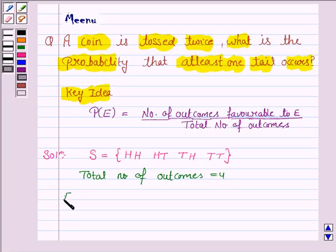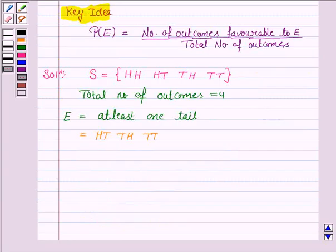So, the total number of outcomes are 4 and E is the event when we get at least one tail. Now, let's see which are the favorable outcomes to E. That is when we get at least one tail. That is we can get one tail or we can get more than one tail.